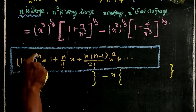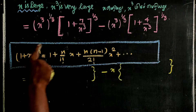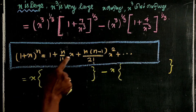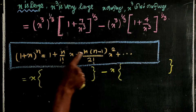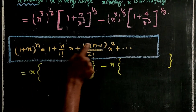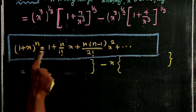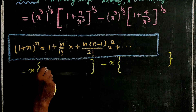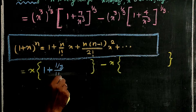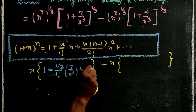Applying the binomial expansion — plus into plus — we get 1 + n/(1 factorial) · x + n(n−1)/(2 factorial) · x² + etc. So the first term gives x times [1 + (1/3) · (7/x³) + etc.]